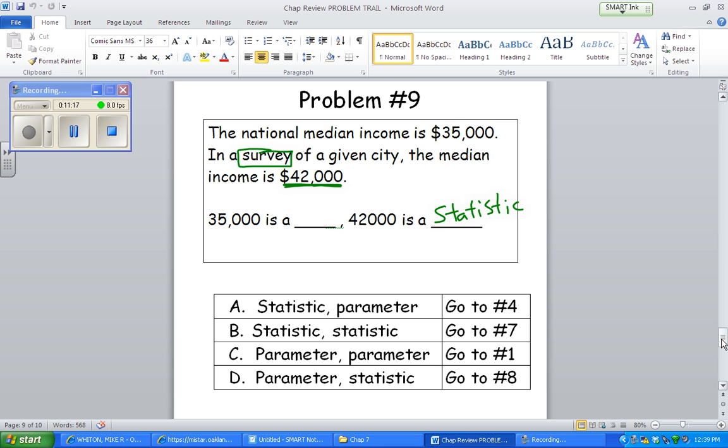Okay. First number given, the $35,000, that's the national number. That's the population value. Okay, population starts with P. Parameter starts with P. That describes populations. Okay, so that one should be answer D. First one's a parameter. Second one is a statistic.